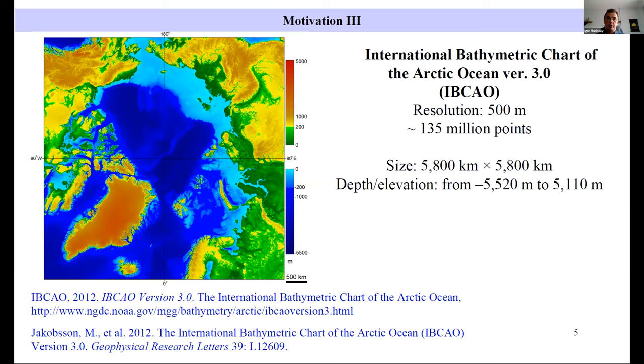Grid size of IBCAO version 3 is 500 meters. Actual resolution varies from part to part and depends on the sources which were used for preparation of this DEM. IBCAO version 3 includes 135 million points. It's free data, available from this web link. Originally IBCAO had a personal website. Now it's linked with NOAA.